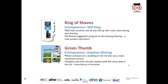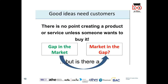A King of Shaves example: someone was fed up with razor burn during wet shaving, so they started using oil on the skin during shaving, and a new product was born. That's all about green-hat thinking — getting creative ideas. Another example: Stephen Ring met someone at a wedding in the US who ran a lawn treatment service. He was the first into the UK market with the same idea and launched a franchise business.